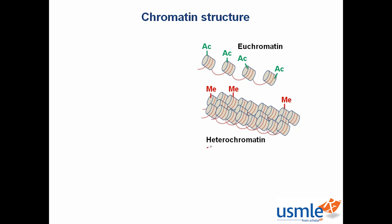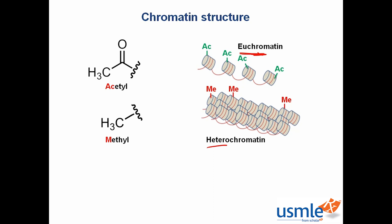So which is transcribed more, heterochromatin or euchromatin? That would be euchromatin, since it's more accessible to the transcriptional machinery. A helpful way to remember this: acetyl groups are much larger than methyl groups and therefore push DNA away from histones, whereas methyl groups are small and allow it to stay close. That's not actually the mechanism, but it might help you keep these straight. You can also use the mnemonics: histone methylation mostly makes DNA mute, and histone acetylation makes DNA active. Keep in mind that this is referring to the methylation of the histone proteins, not DNA.